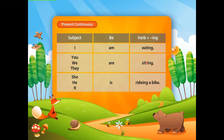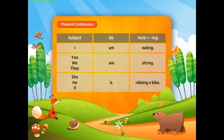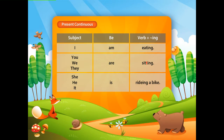So, to say 'I eat' in present continuous, you say 'I am eating.' Just like with 'eating,' you always add ing to the base verb to form the present continuous.